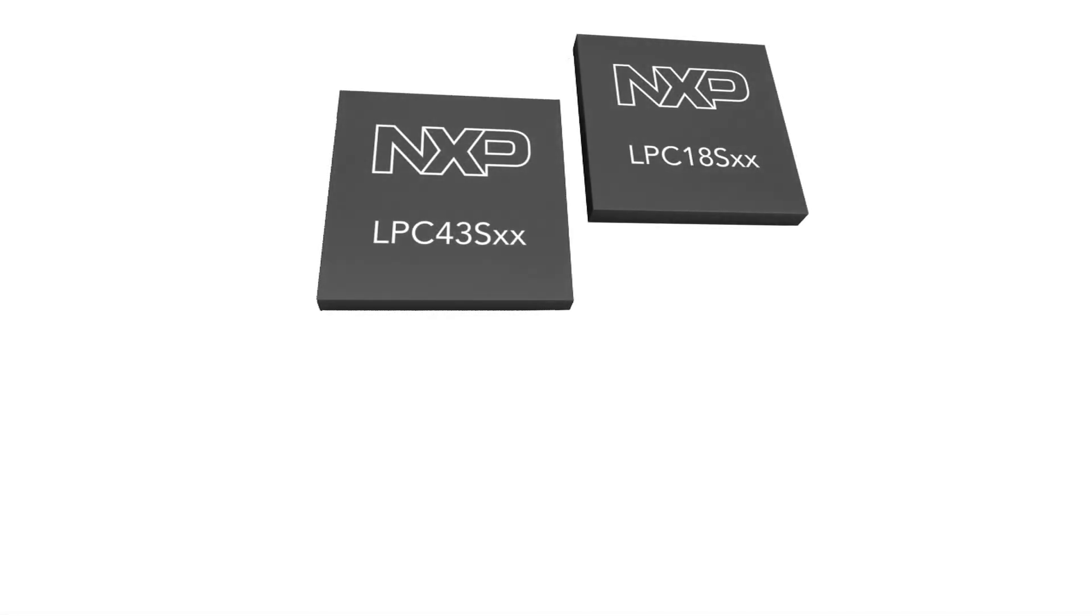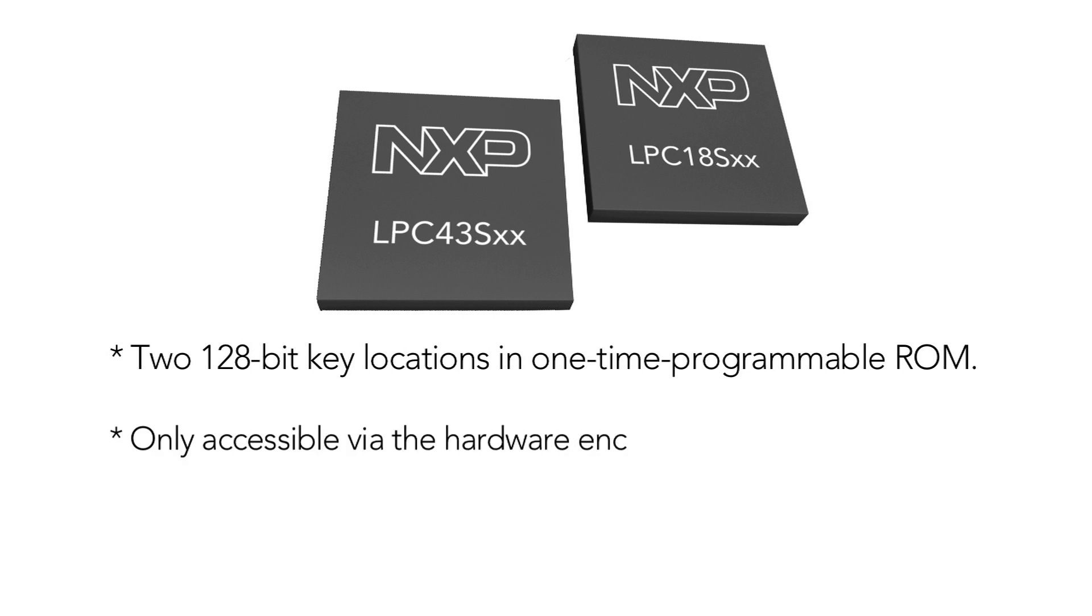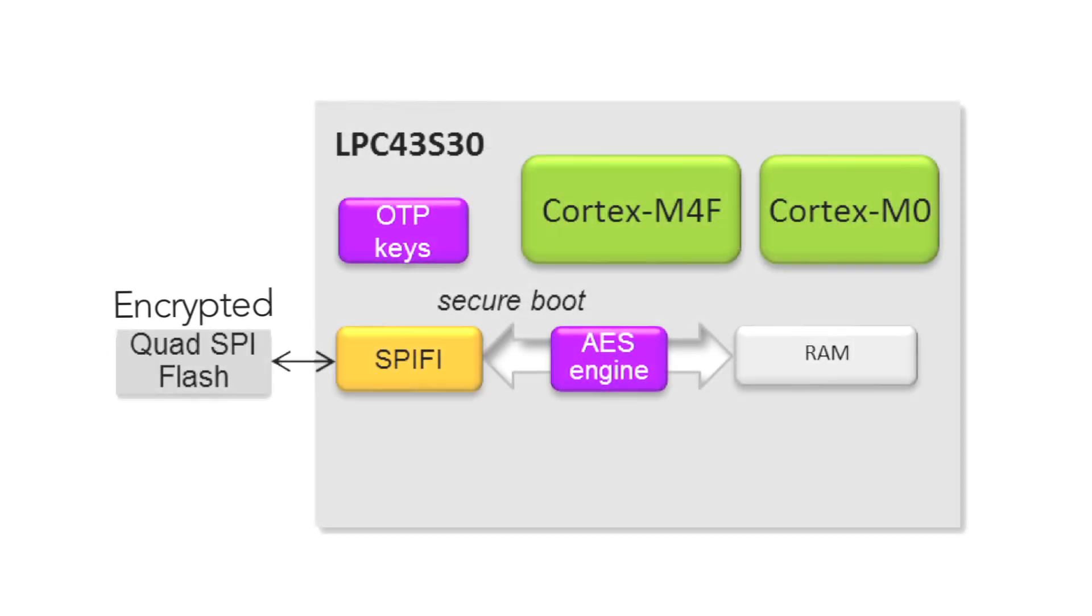The 18S and 43S families have two 128-bit key locations in one-time programmable ROM. Once the AES keys are programmed and stored in scrambled locations, they are only accessible via the hardware encryption block and cannot be extracted using software. AES keys programmed in OTP also support secure booting from an external encrypted source.